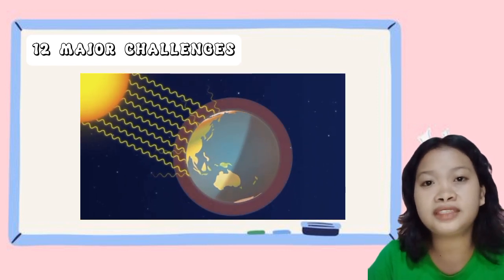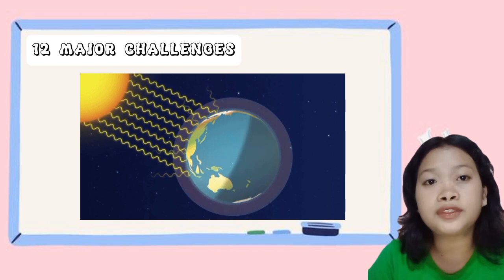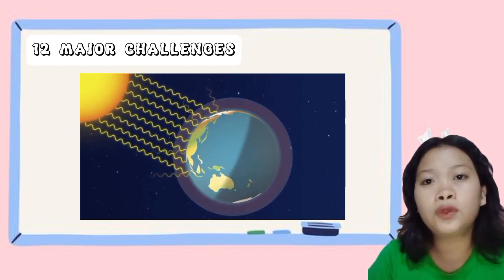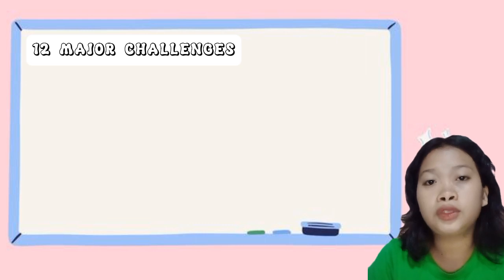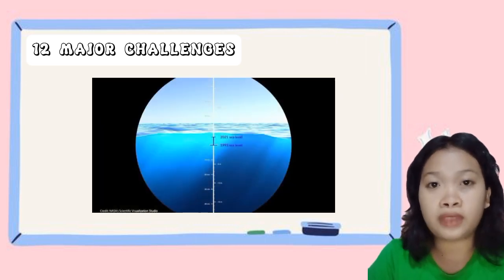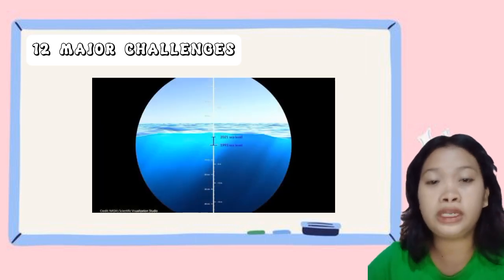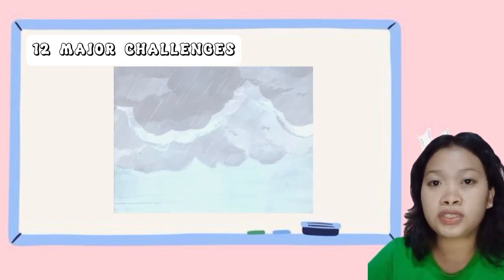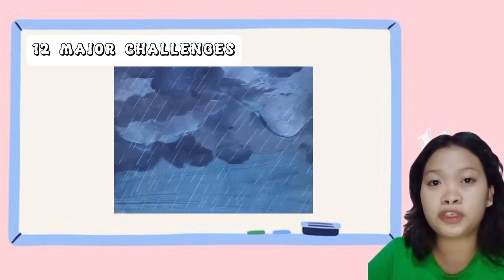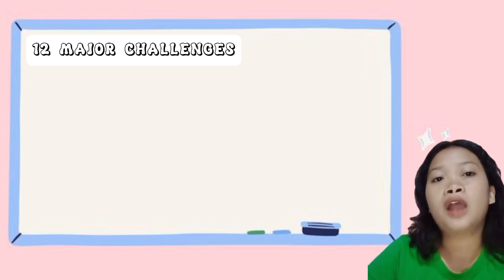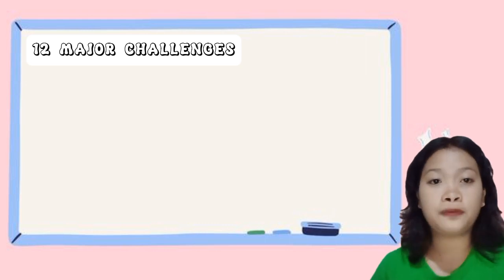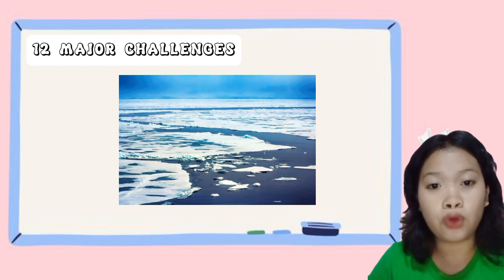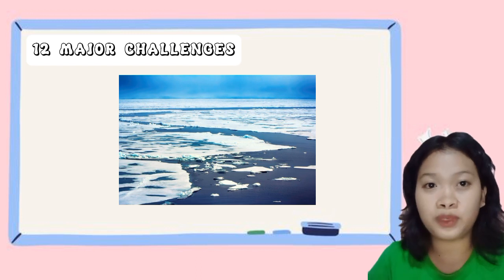These gases trap heat from the sun and cause the Earth's temperature to rise. The effects of global climate change include rising sea levels, more frequent and intense extreme weather events, and changes in precipitation patterns. For example, the melting of polar ice caps is causing sea levels to rise and threatening low-lying areas with flooding.